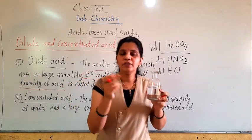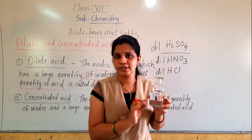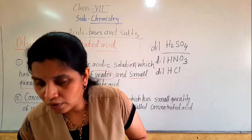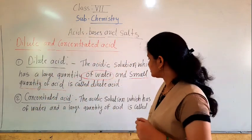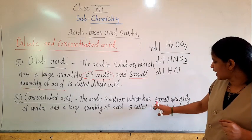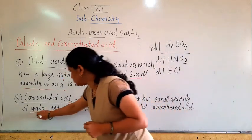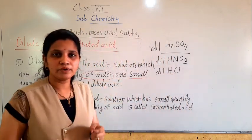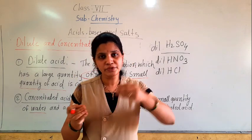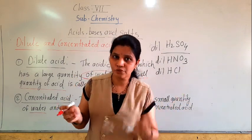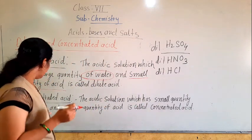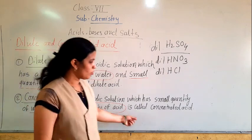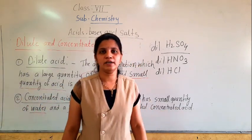You may have seen some brown color bottles in the lab. In those bottles, the concentrated acid is present. Concentrated acid means an acidic solution which has a small quantity of water. It is very strong — if you take one drop of the acid, fumes will come out. It contains a small quantity of water and large quantity of acid, and is called a concentrated acid.